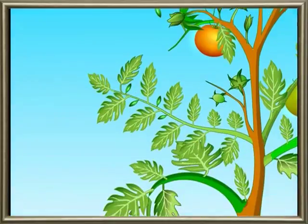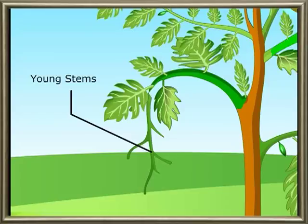Young stems are green whereas mature stems are brown in colour. The functions of the stem include: giving support to branches, leaves, and fruits; establishing connection between roots and leaves; supplying water and minerals from roots to leaves, flowers, and fruits; supplying food materials prepared in the leaves to roots and other parts; and performing photosynthesis in young plants. Some stems store food material, like sugarcane, turmeric, ginger, potato, and garlic.